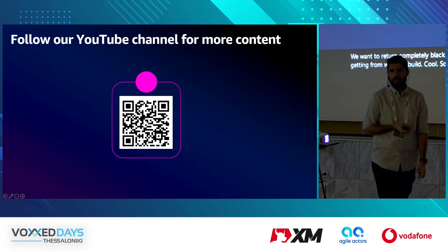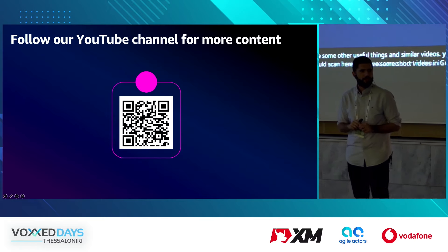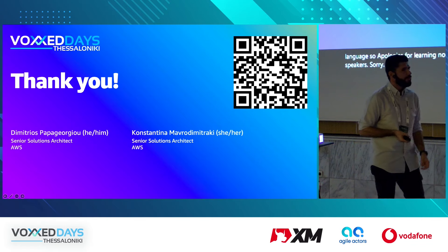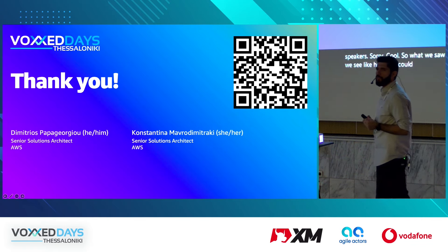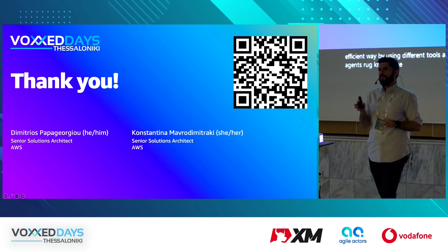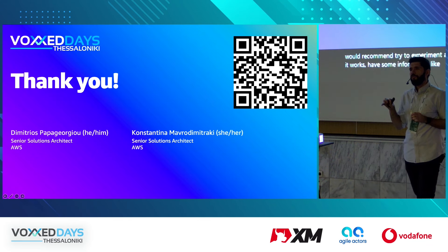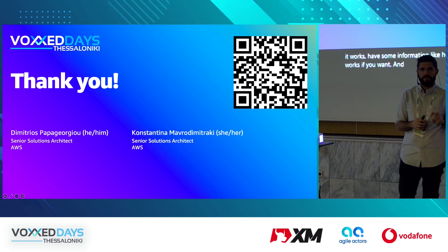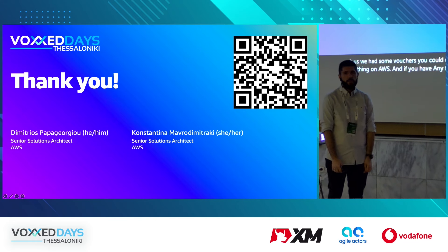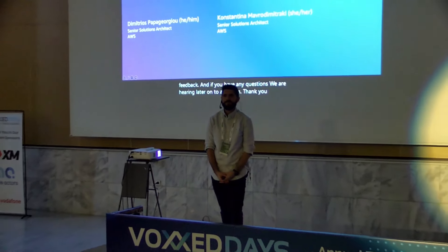For more resources and similar videos, you can scan the QR code — we have short videos in Greek language, apologies to non-Greek speakers. To summarize what we saw today: you can build generative AI applications quickly and efficiently using agents, RAG, and knowledge bases. The next step is to experiment — see how Bedrock works, and if you're fast, ask us about vouchers you can use to build something on AWS. Scan the QR code to give us feedback or ask questions. Thank you very much!